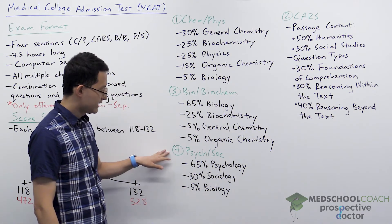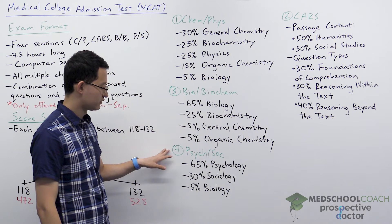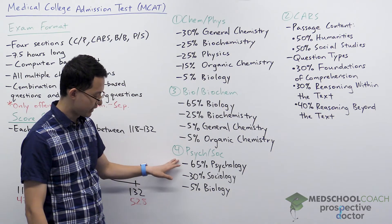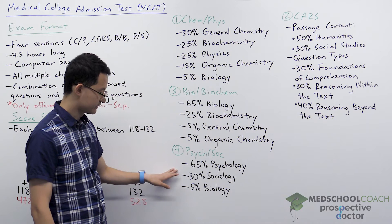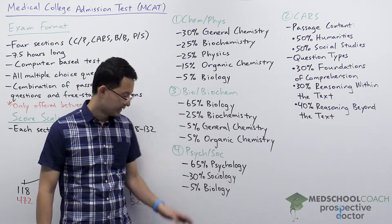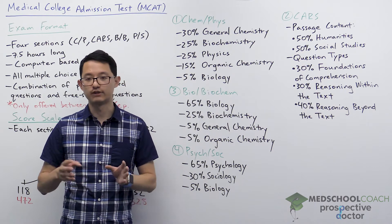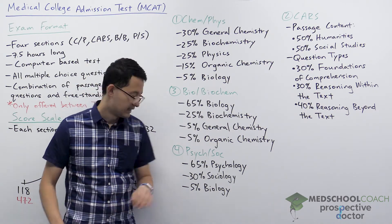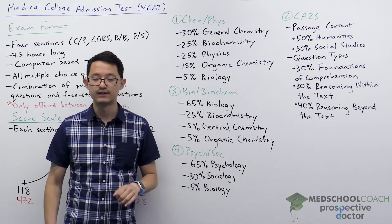The last section is the psychological, social, and biological foundations of behavior, or the Psych-Soc section. This section is 65% psychology, 30% sociology, and 5% biology. The psychology and sociology content is introductory level, so intro to psychology and intro to sociology are sufficient preparation.